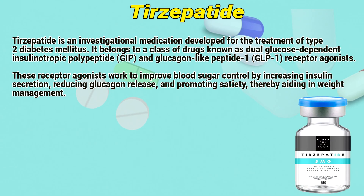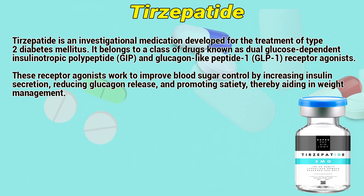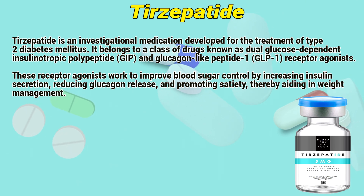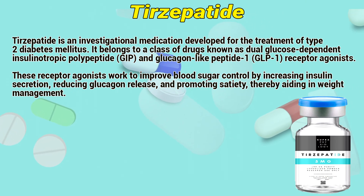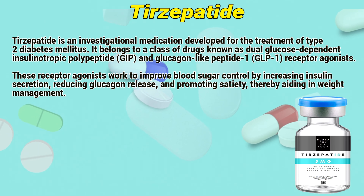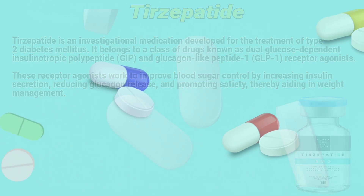Tirzepatide is an investigational medication developed for the treatment of type 2 diabetes mellitus. It belongs to a class of drugs known as dual glucose-dependent insulinotropic polypeptide and glucagon-like peptide-1 receptor agonists. These receptor agonists work to improve blood sugar control by increasing insulin secretion, reducing glucagon release, and promoting satiety, thereby aiding in weight management.